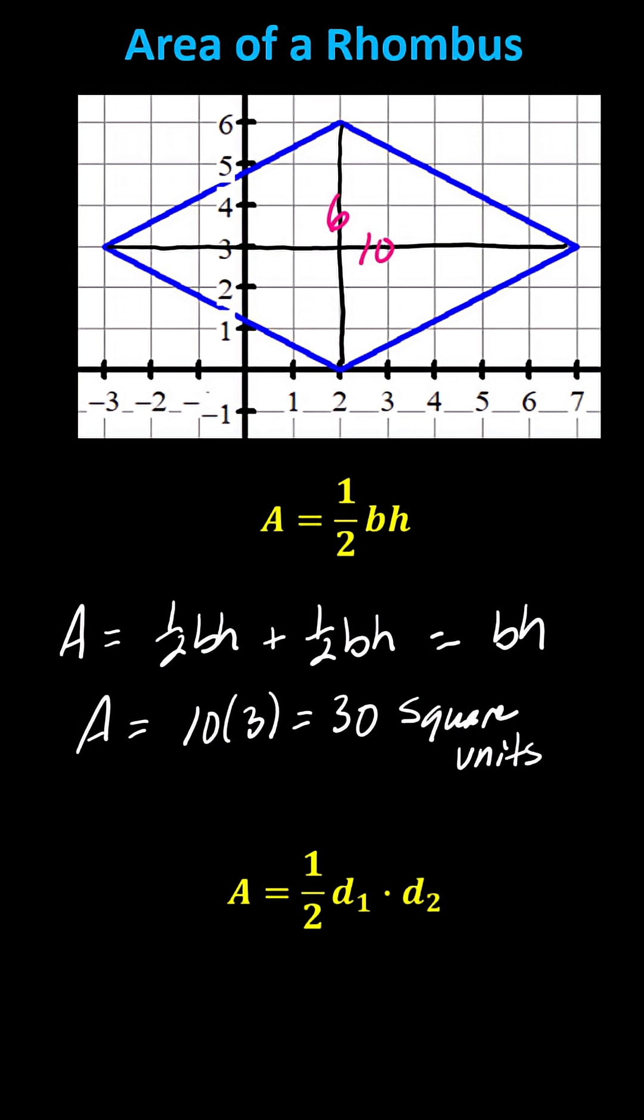Using the area formula, we have the area equals one-half times diagonal one, which is 10 units, times diagonal two, which is 6 units, which also gives us 30 square units.